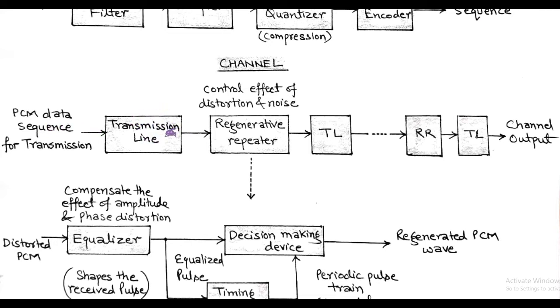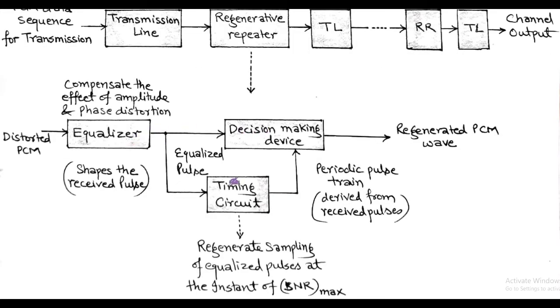But along the transmission path, there is a probability of distortion and noise. In order to control this effect, regenerative repeaters are connected regularly within short distances along the transmission line. Regenerative repeater consists of equalizer, timing circuit, and the decision making device.